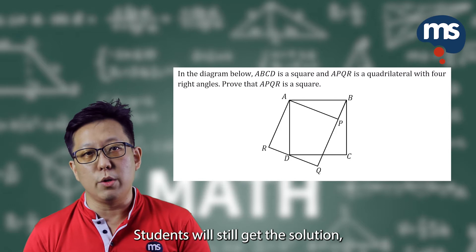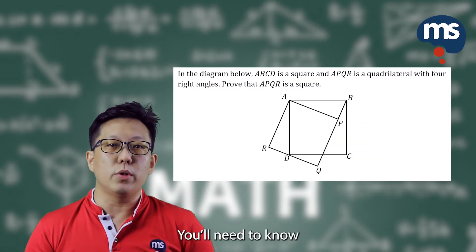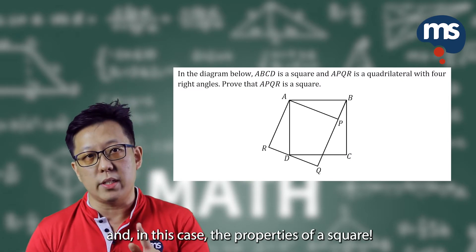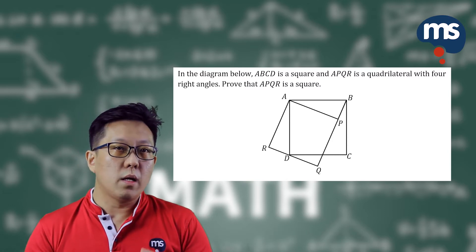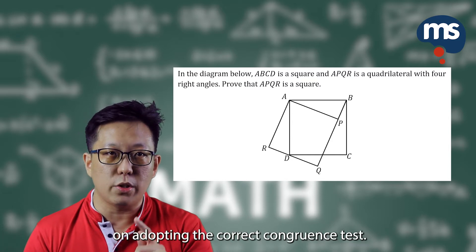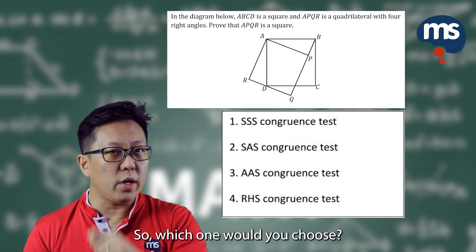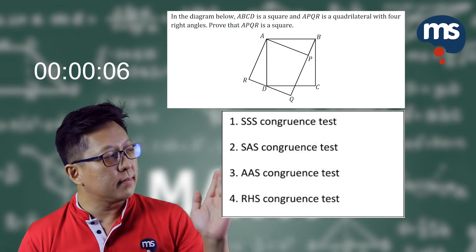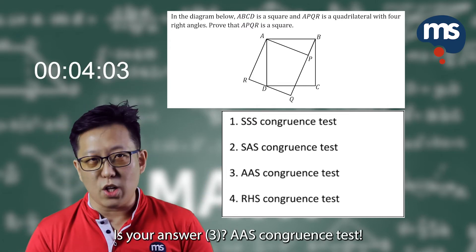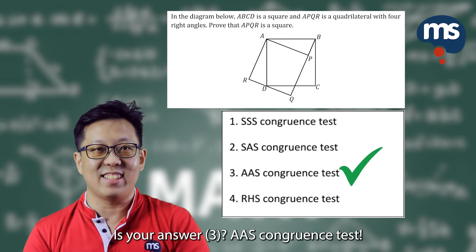Students will still get a solution, but the wrong solution. You will need to know the properties of geometry very well, and in this case the properties of a square. For this question, the examiner is testing you on adopting the correct congruence test. So, which one would you choose? It's option number 3 — AAS congruence test.